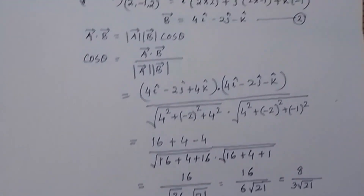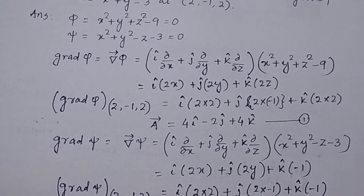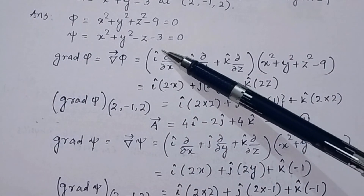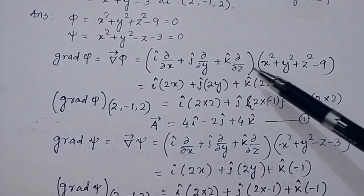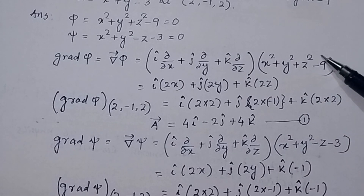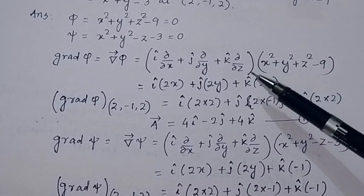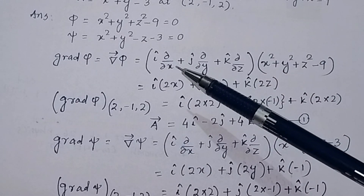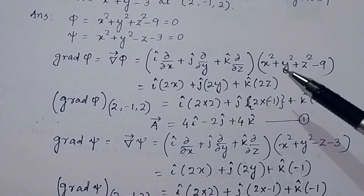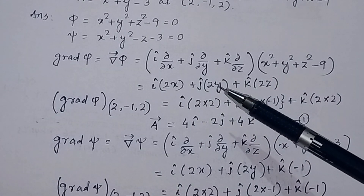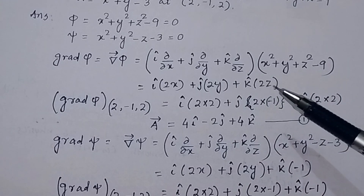Let us work out the problem. First, find the gradient of surface φ, that is ∇φ. The del operator operates on φ, which is a scalar function, producing a gradient vector. Taking the partial derivative of x² with respect to x gives 2x, of y² with respect to y gives 2y, and of z² with respect to z gives 2z.